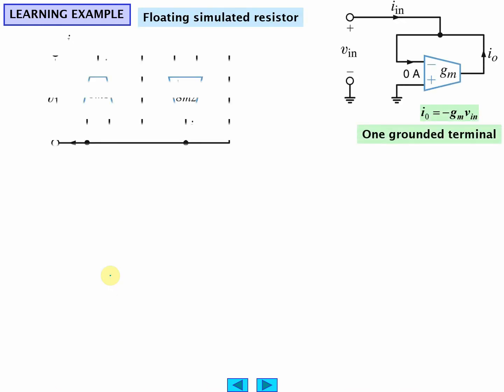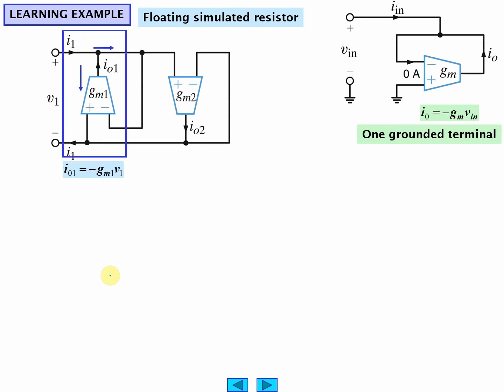Floating resistor. Same sort of operation except remember the regular, the one grounded terminal, you had a terminal grounded in the last example for resistance. Now you've got something that can float.